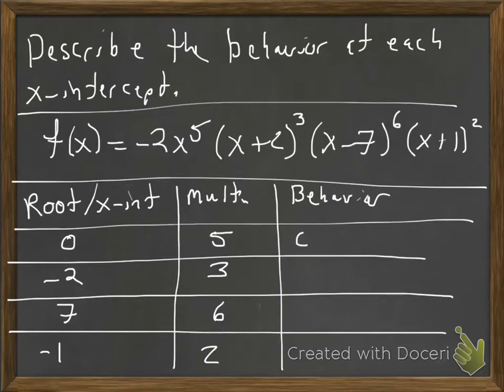And then all we've got to do is, is it odd or even? Odds across, evens a bounce. So odds are crosses, evens are bounces.